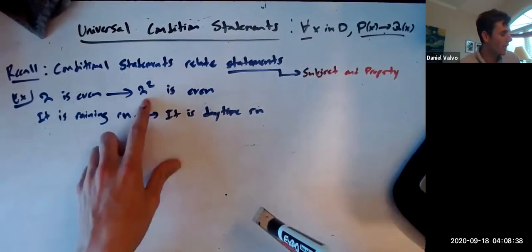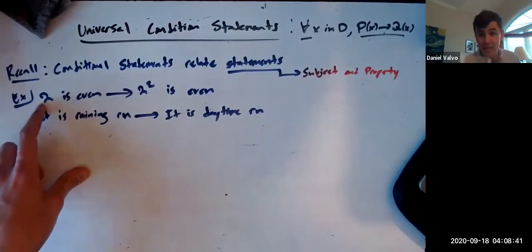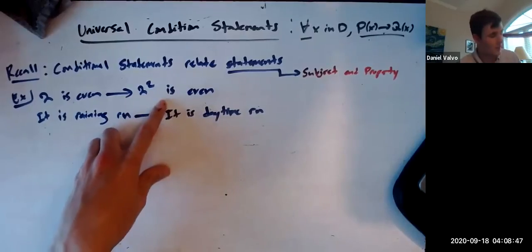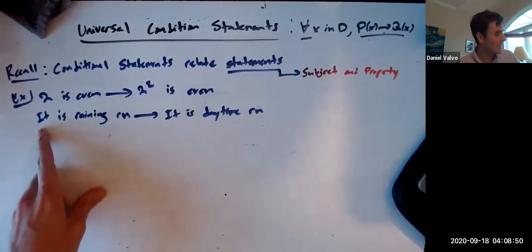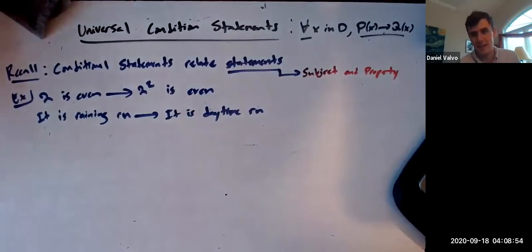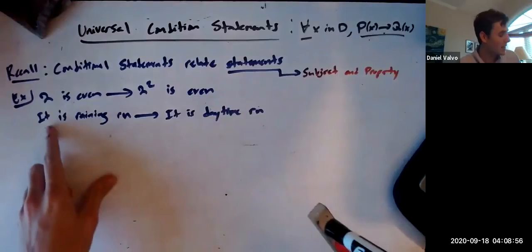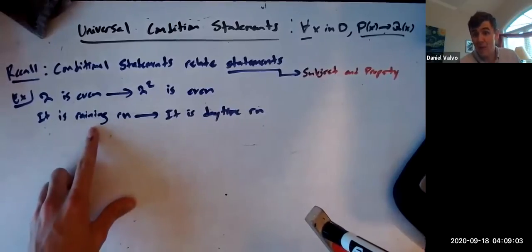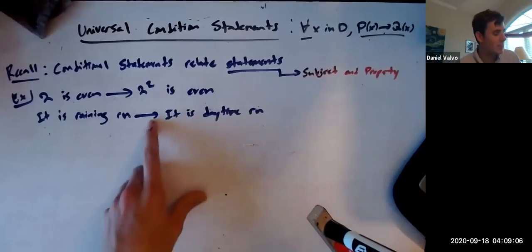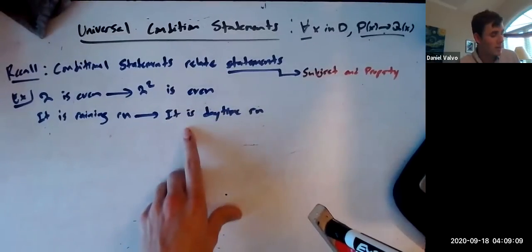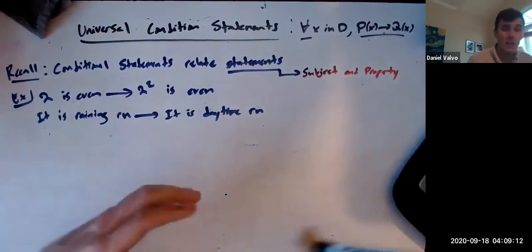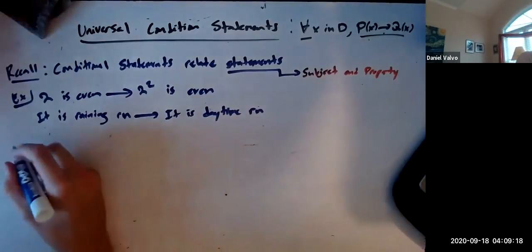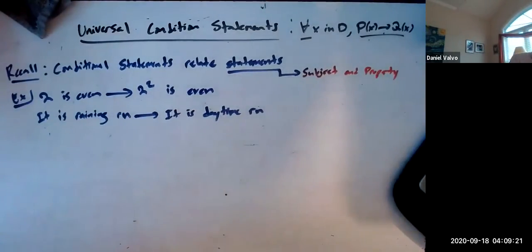But the problem is this statement is really saying something about a subject and a property together. It's saying this specific subject with this specific property will follow this specific subject also having this specific property. Same thing here - the subject is two. It's saying that this specific subject, two, has the property of being even, and it follows then that this specific subject squared has the property of being even. But...